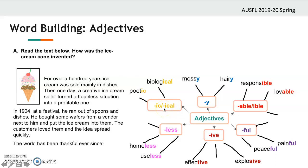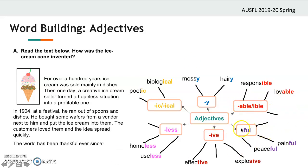Let's start with -y: 'mess' becomes 'messy,' 'hair' becomes 'hairy.' This suffix gives the meaning of describing a main quality. Then we have -able: 'response' becomes 'responsible,' 'love' becomes 'lovable' — giving the meaning of being capable or able. And -ful: 'pain' becomes 'painful,' 'peace' becomes 'peaceful.' Then -ive: 'effect' becomes 'effective,' 'explode' becomes 'explosive' — giving the meaning of having the nature of something.